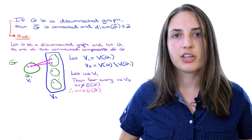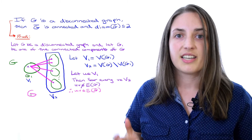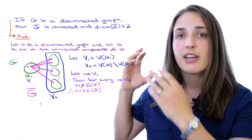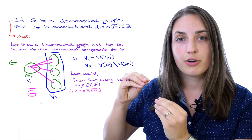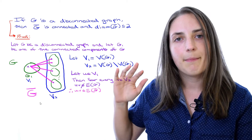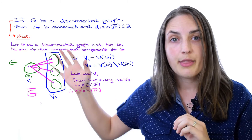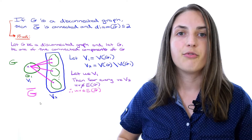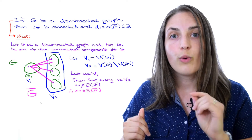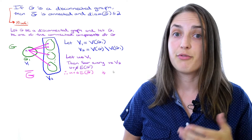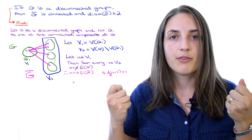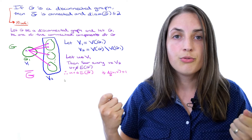Let me draw all those edges in generically in pink to represent the complement graph. When I take the complement of G, lots of changes occur within the blobs too — adjacent pairs become non-adjacent and vice versa. But what's really important is what happens between V1 and V2. Any vertex U which belongs to V1 will be adjacent to any vertex V which belongs to V2. That means their distance equals one in the complement graph.